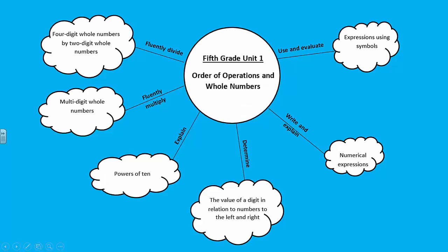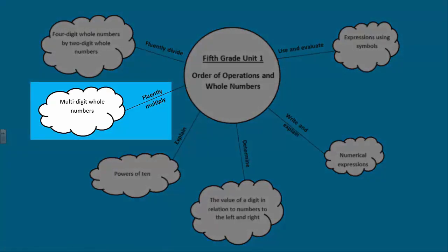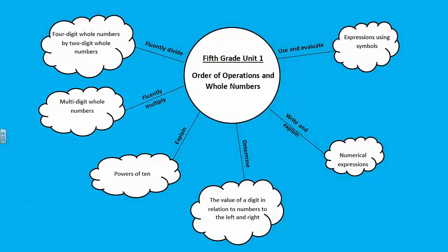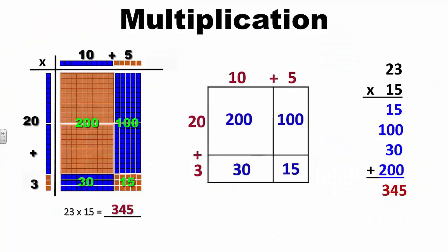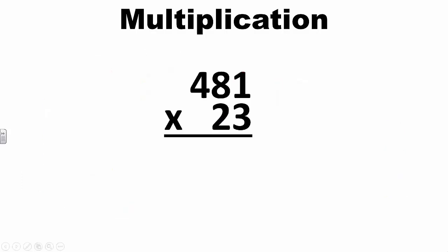In the next segment, we'll look at Standard NBT-5: Fluently multiply multi-digit whole numbers using the standard algorithm up to a 3-digit by 2-digit factor. This standard builds upon students' work with multiplying numbers in third and fourth grades. In fourth grade, students developed understanding of multiplication through various strategies. Fifth grade is the first grade level where students are expected to be proficient using the standard algorithm to multiply. It is important to reinforce concepts of place value — for example, the 2 in the tens position has a value of 20, so it should be referred to as 20 instead of 2.